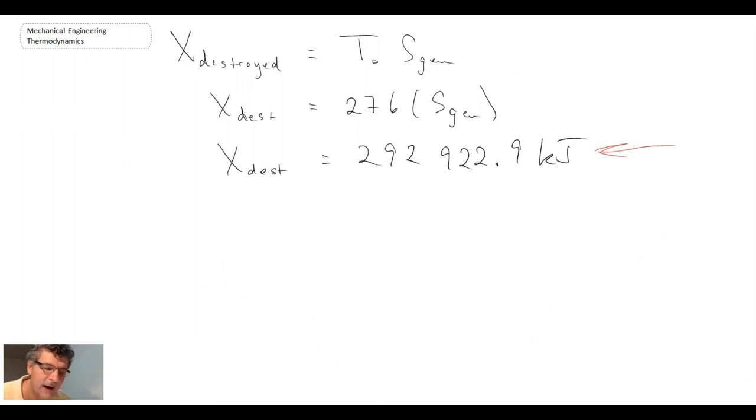When you look at the analysis, however, the entropy generation approach was a little easier. And entropy generation is usually the easier approach here. So, we'll now move on to the third part, which is to look at the minimum work input, which we'll do in the next segment.